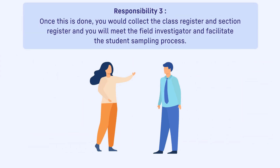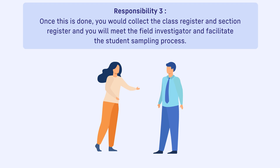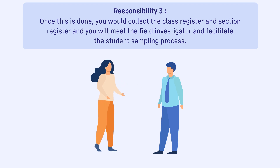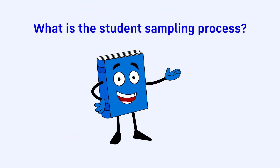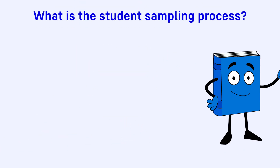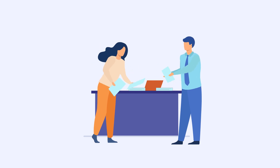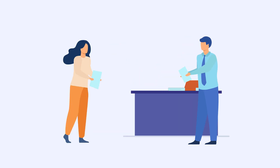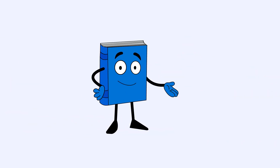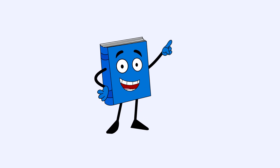Once this is done, you would collect the class register and section register, and you will meet the field investigator and facilitate the student sampling process. The student sampling process is the procedure by which you and the field investigator will select the students who will give NAS 2021 for a particular grade. A step-by-step guide on the sampling process has been covered in later modules.